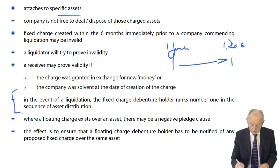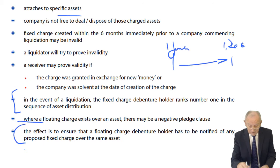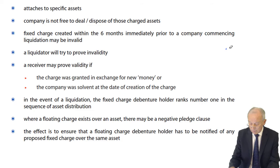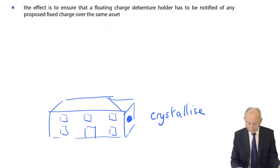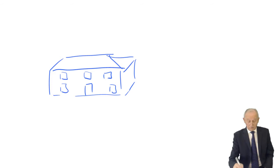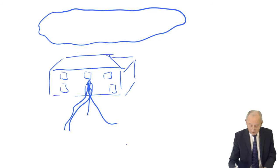Where a floating charge exists over an asset, there may be a negative pledge clause ensuring the floating charge debenture holder must be notified and approve any fixed charge getting prior claim over the same asset. A floating charge floats — it's like a big cloud floating above the building. All the time, inventory comes in and goes out, receivables are created and paid. These current assets circulate through the company.